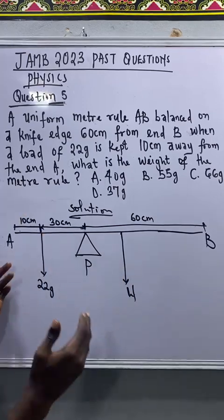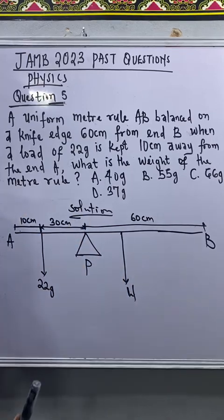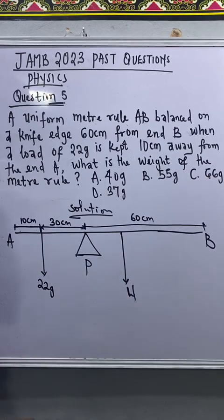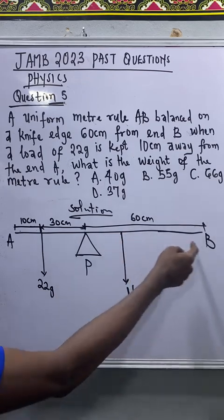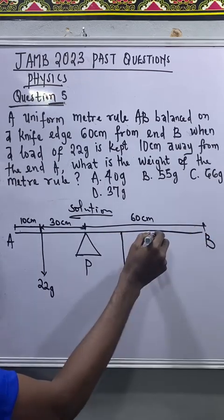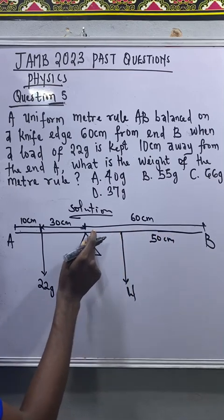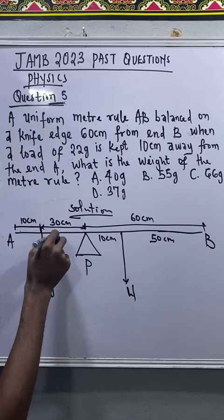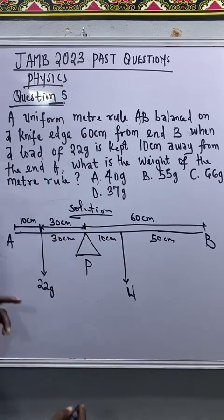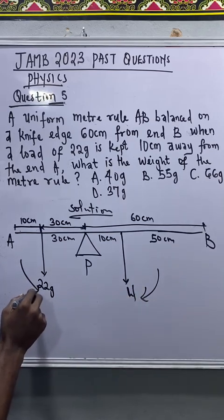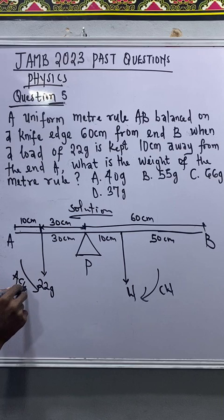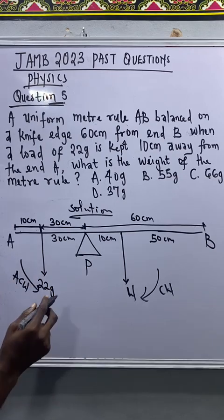From the principle of moments, clockwise moment is equal to anti-clockwise moment. Now if from here to here is 50 centimeter, that means the remaining part here will be 10 centimeter. And you see that here is 30 centimeter. So this will be clockwise and this will be anti-clockwise.